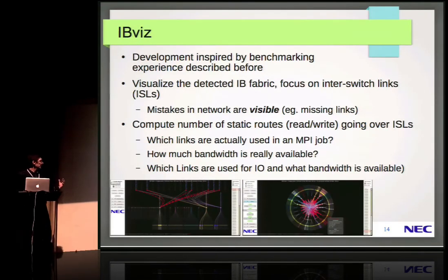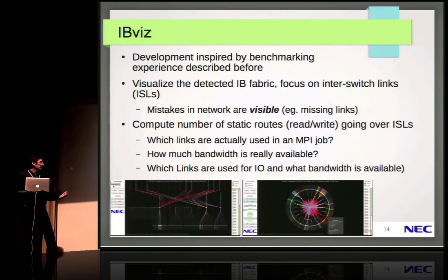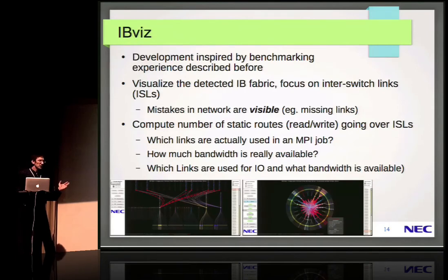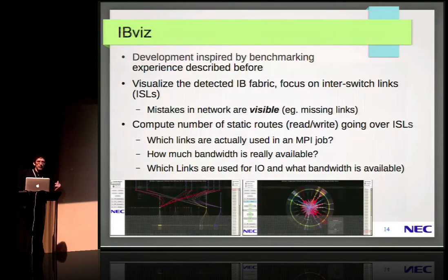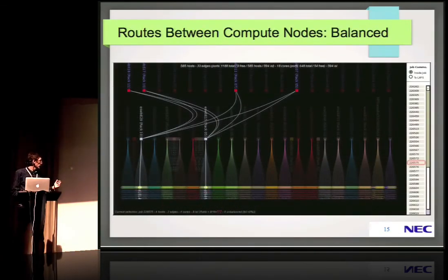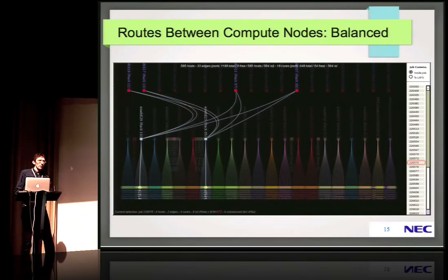This experience inspired the development of a tool. What we tried to do is detect and visualize the InfiniBand fabric. The first use of the tool is to detect the fabric and just look at it — if you have mistakes such as missing links, you will see a pattern mismatch when animating through the connections. The second use is to display over-commitment in the static routes of the links, and that's roughly what it looks like. If somebody is interested, I can show it on my laptop during the break.